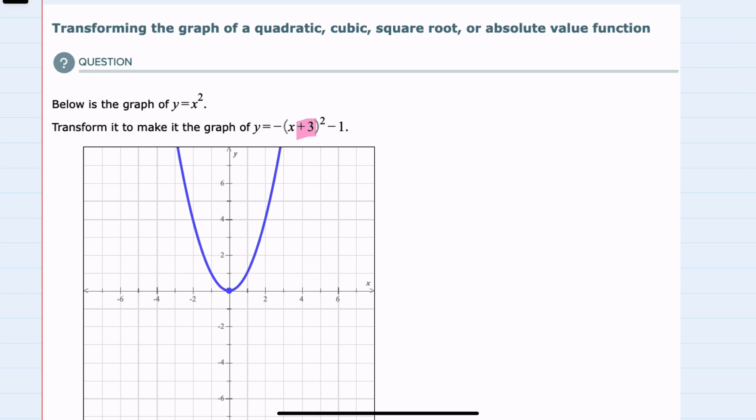First there is a plus 3 inside the parentheses, there's a minus 1 outside the parentheses, and then there is a negative in front of the function. So we're going to consider how each of these affect the graph of the function.